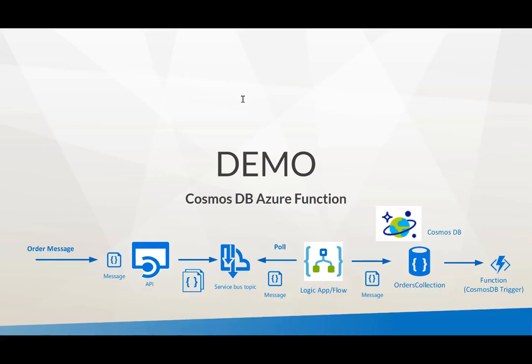This demo shows you can integrate with Cosmos DB through a Logic App connector, and also with the Cosmos DB trigger to have a function act upon your collection. If you get multiple documents in, you can have a change feed mechanism using that function — triggered every time changes happen in your collection. So if orders come in and something happens to an order, you can act upon that.